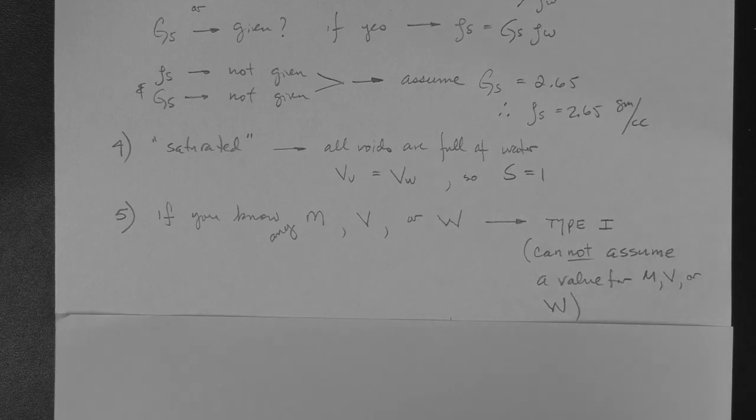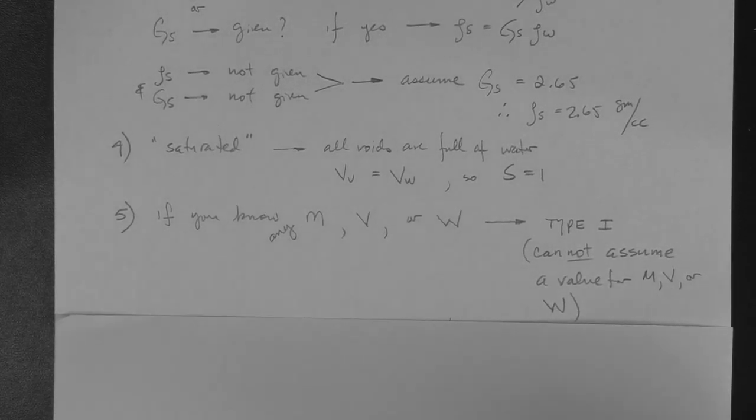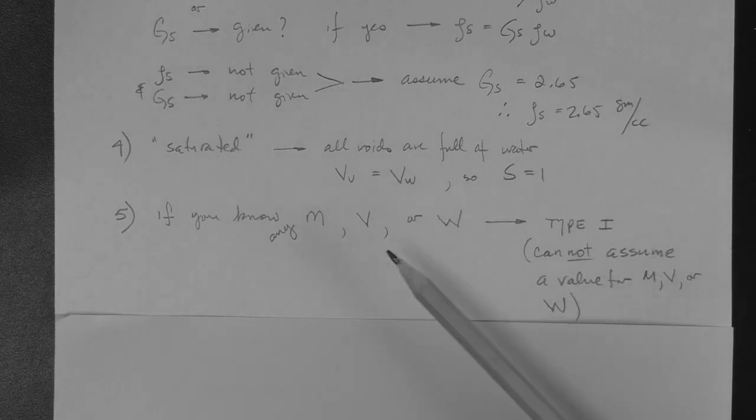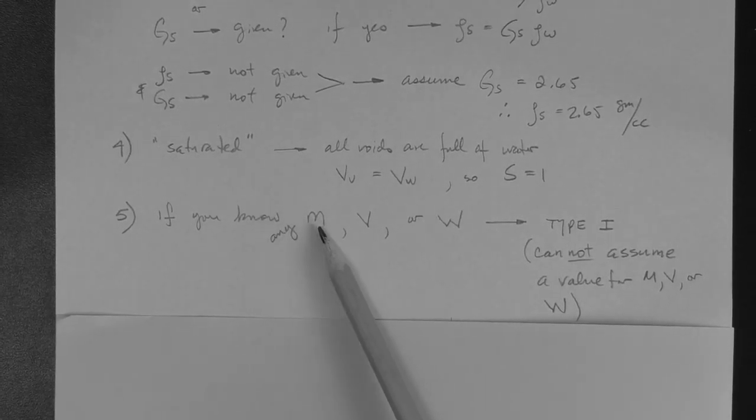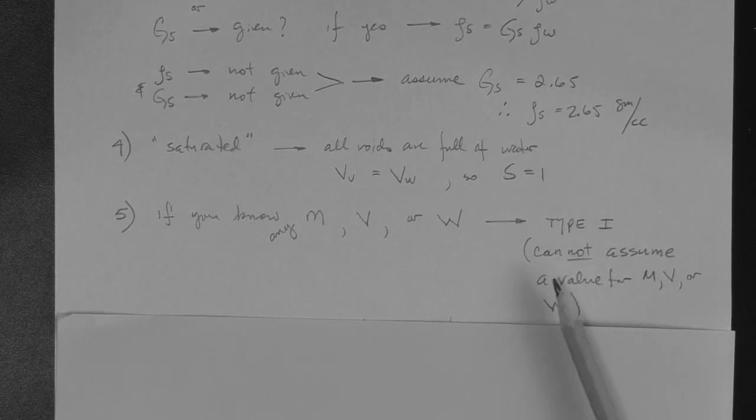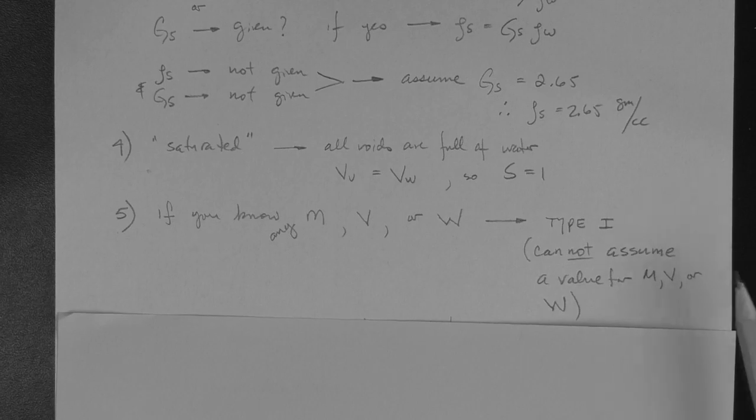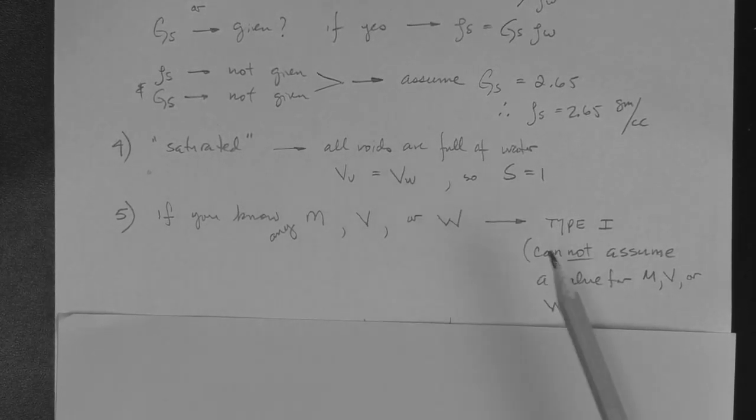This is a good one right here. If you know or if you're given any value of mass, for example, the mass of the dry soil or the mass of the wet soil, if you're given any value of the mass, or any value of the volume, for example, the volume of voids, or the volume of water, or any value of weight, the weight of the soil, or the weight of the water in the soil. If you're given any of these, then this problem is called the type 1 problem. And you cannot assume a value for mass, or a value for volume, or a value for weight of any component. You cannot assume. You have to proceed with what you know to solve the problem.